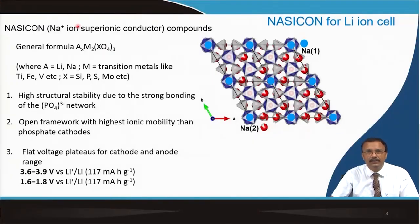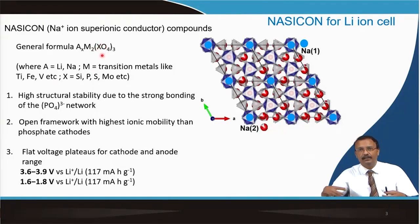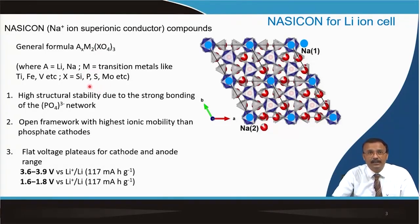Now, sodium ion superionic conductors have a general formula where A could be lithium — in the case we have considered, it is sodium — and M is a transition metal like titanium, vanadium, or iron. X here constitutes a tetrahedral arrangement, including silicon, phosphorus, sulphur, or molybdenum. So this is a general formula.